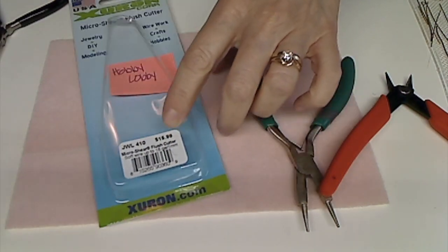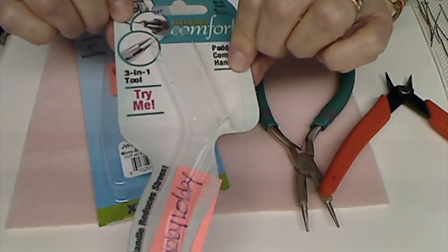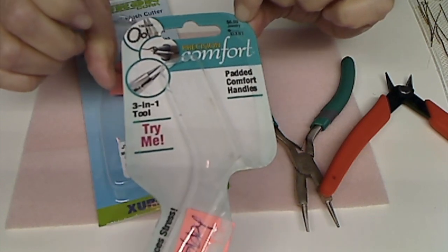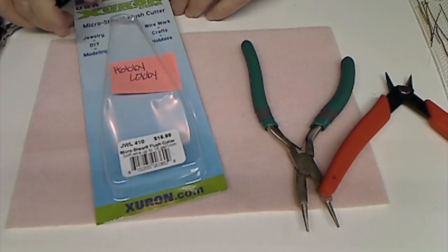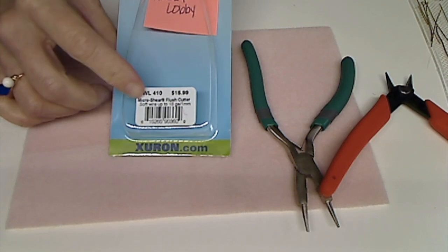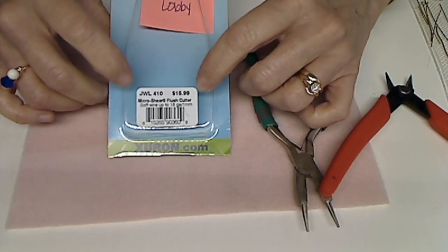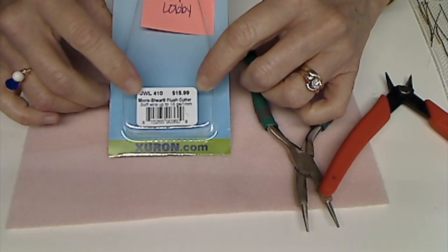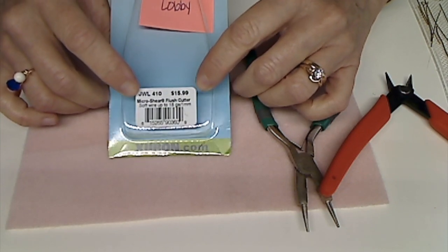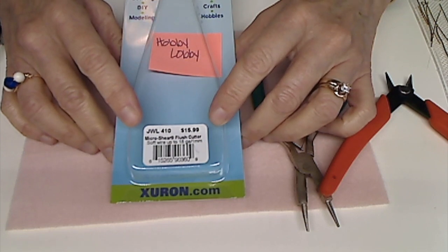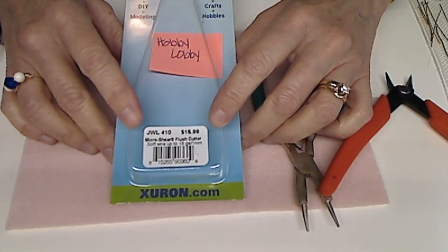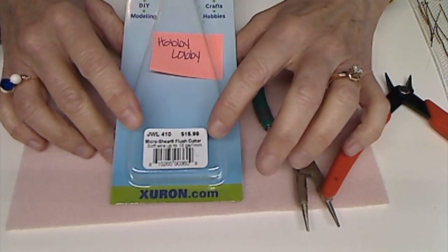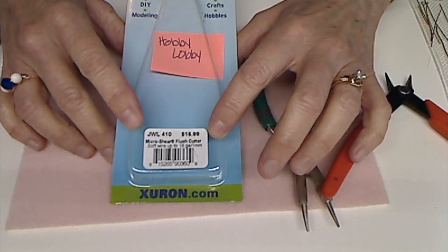Now prices. These were $6.99. So not too bad. The flush cutters, $15.99. So I really suggest that you use a 40% off coupon at Hobby Lobby. They have them every week. And they have an app that you can download.